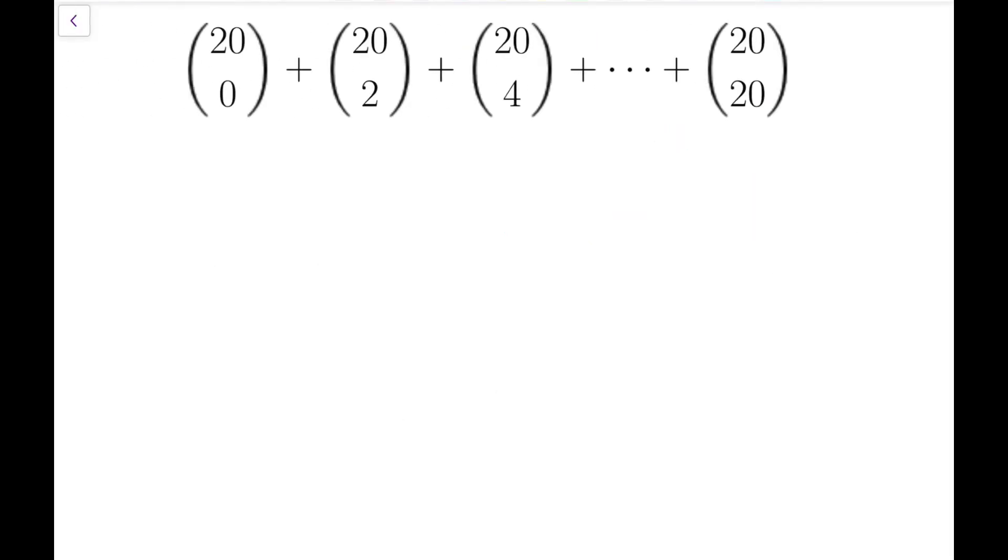I'm going to end this video by evaluating this sum as an extension of what I've done previously. As you can see, the numbers 20 choose some odd number, say 20 choose 1, 20 choose 3, and so on, are omitted.